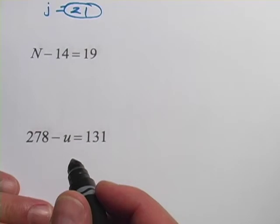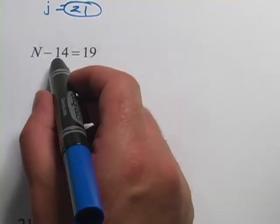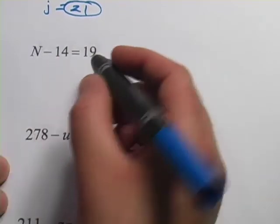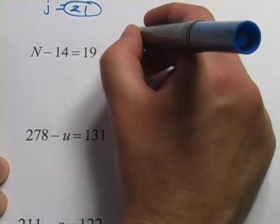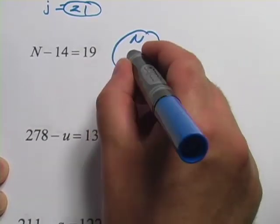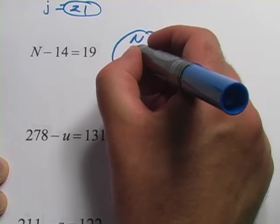Let's try another one. This one says N minus 14 equals 19. So you're starting with some big pie that we'll call N and it's got a sliver, well, actually a really big sliver, much bigger than I'm showing here.